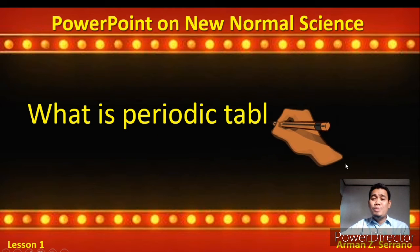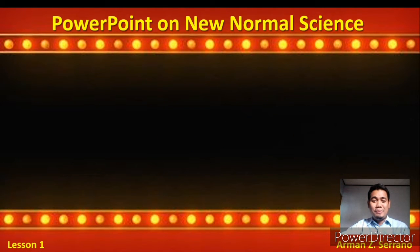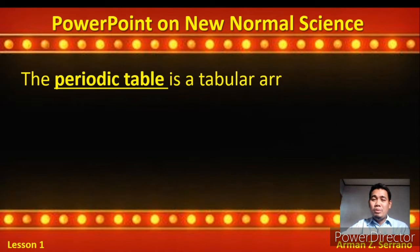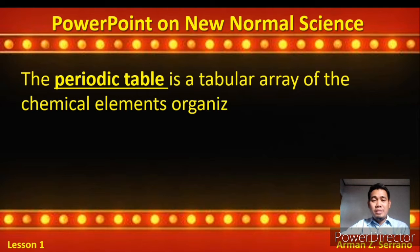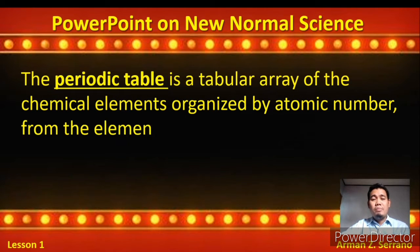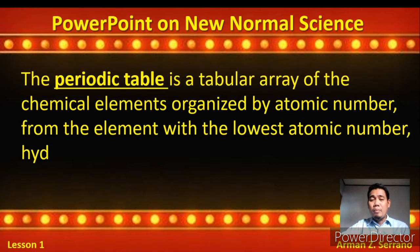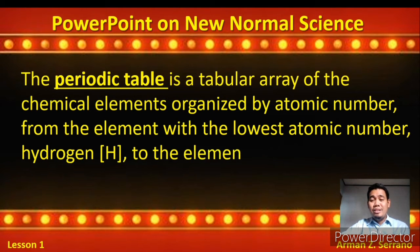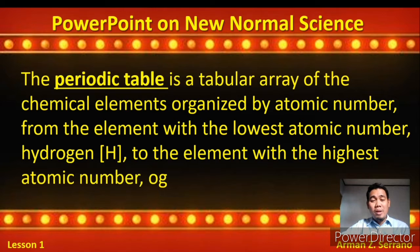What is the Periodic Table? The Periodic Table is a tabular array of the chemical elements organized by atomic number, from the element with the lowest atomic number, hydrogen, to the element with the highest atomic number, oganesson.